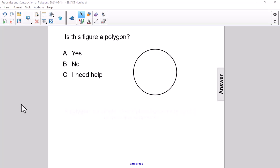Is this figure a polygon, yes or no? Now this can be kind of tricky because a circle is a very common shape, it's a recognizable shape, we're all familiar with, but does it fit the criteria of a polygon?